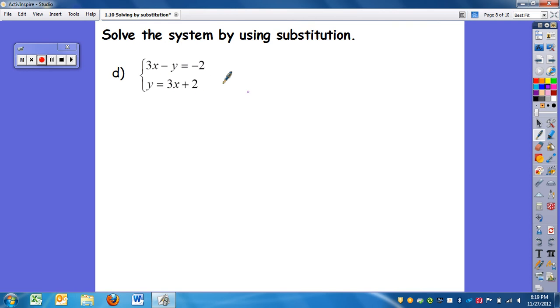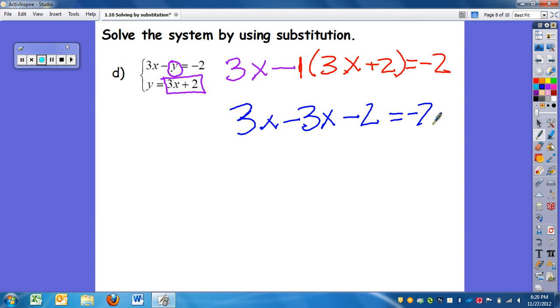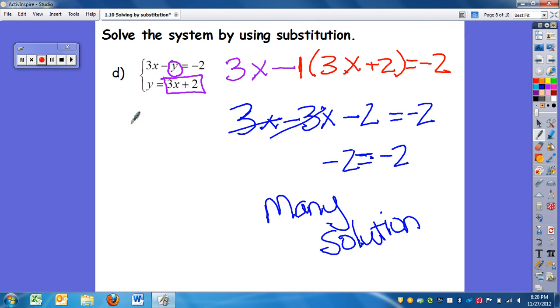So on d, again, I have it all set up for substitution because I have y equals 3x plus 2. So I'm going to replace this y. So I have 3x minus 3x plus 2 equals negative 2. So again, there's a negative 1. So I can distribute. I have 3x minus 3x minus 2 equals negative 2. So I have 3x minus 3x, which is 0x. So they essentially cancel each other out. And I'm left with negative 2 equals negative 2. So if you remember back to our equations, when we're solving equations, if you got a statement like this where negative 2 does equal negative 2, we write infinitely many solutions. And what's happening here, if you think of our graphing from the previous video, these two lines are the same.